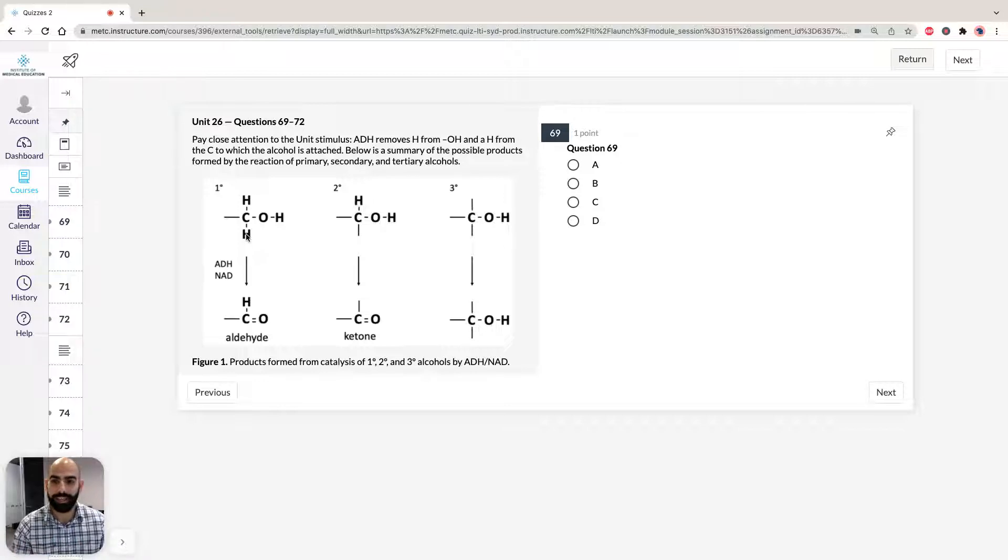Straight away the alarm bell should be ringing. If they're telling you that it's the hydrogen directly attached to the carbon attached to the alcohol, you should note that if we take a look at primary, secondary, and tertiary alcohols, tertiary alcohols don't have a hydrogen directly attached, which means tertiary alcohols will not react in the presence of alcohol dehydrogenase. That's one thing to note, because there's a couple of questions here that require you to know this key piece of information.